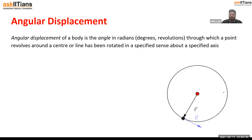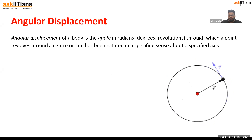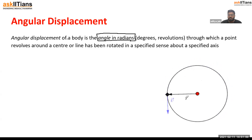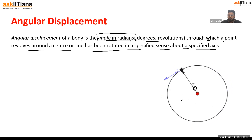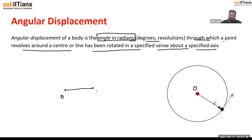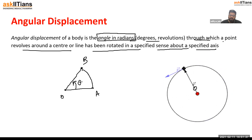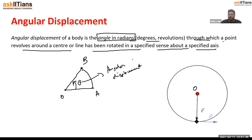Moving on to angular displacement. Angular displacement is the angle between the initial and final position of any rotating object. It is the angle in radians through which a point revolves around the center. In the diagram, this body is rotating about the center point O. Suppose a body starts at initial position A and after a time interval moves to position B along the circle — the angle θ it covers is known as the angular displacement of that body.